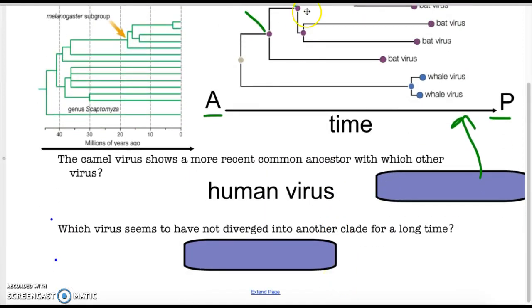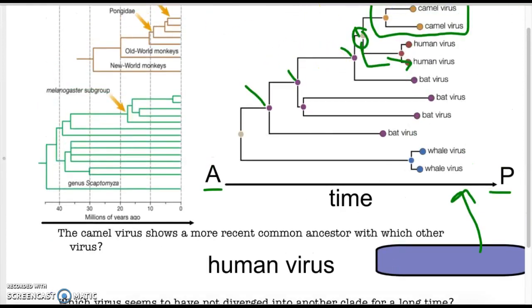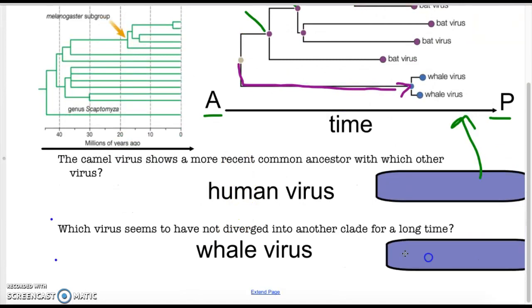Next question says, which virus seems to have not diverged into another clade for a long time? You want to be looking at a clade that has a very, very long, long line. This seems to be the longest line, and so the answer would have been the whale virus. It has not diverged into other species for a very, very, very long time. So the answer would have been whale virus.